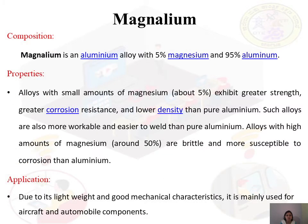Magnelium is also an aluminium alloy consisting of five percent magnesium and 95 percent aluminium. It has high strength, good corrosion resistance, and less density. Note: if magnesium is present in a small quantity it gives greater resistance to corrosion, but if the magnesium content is around 50 percent the alloy becomes brittle and susceptible to corrosion.